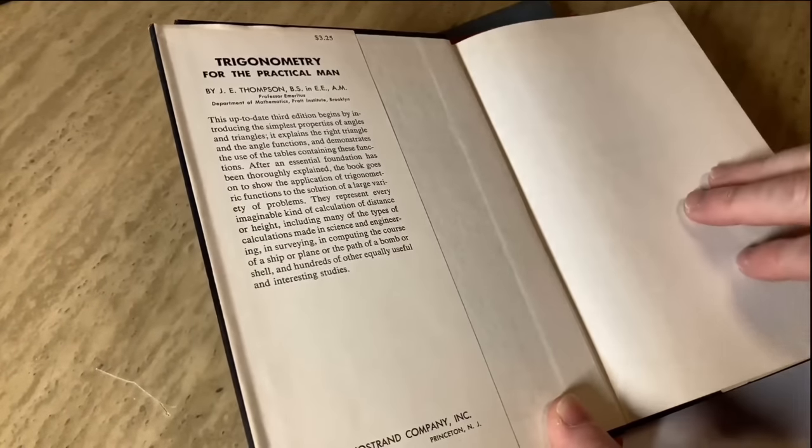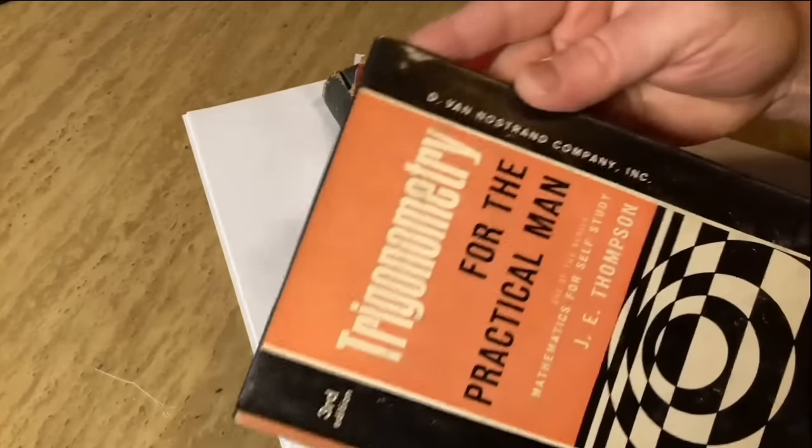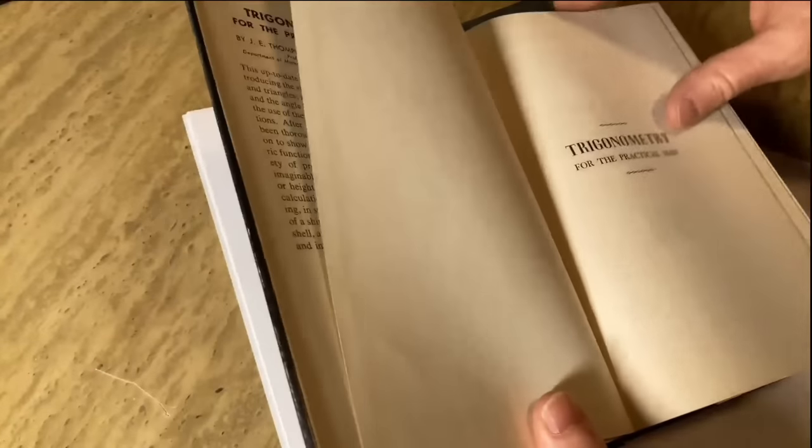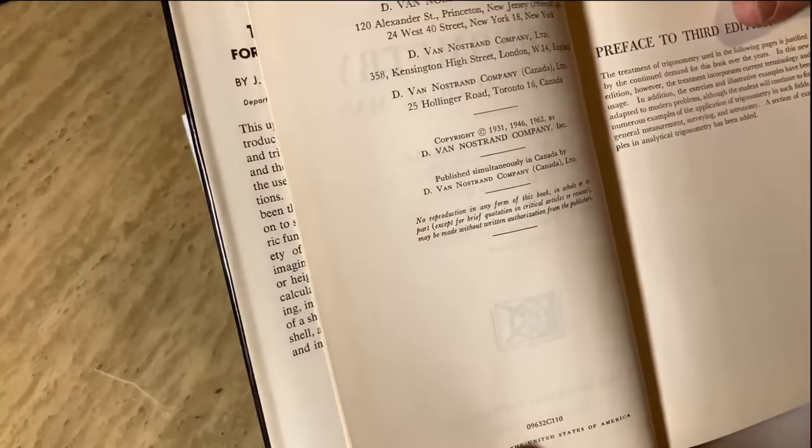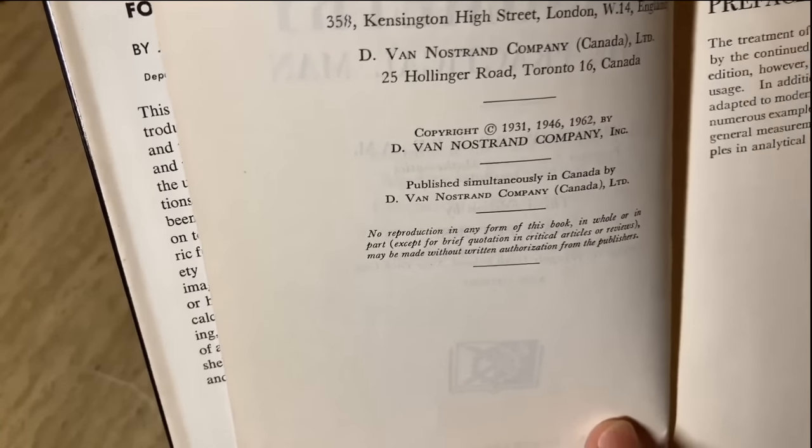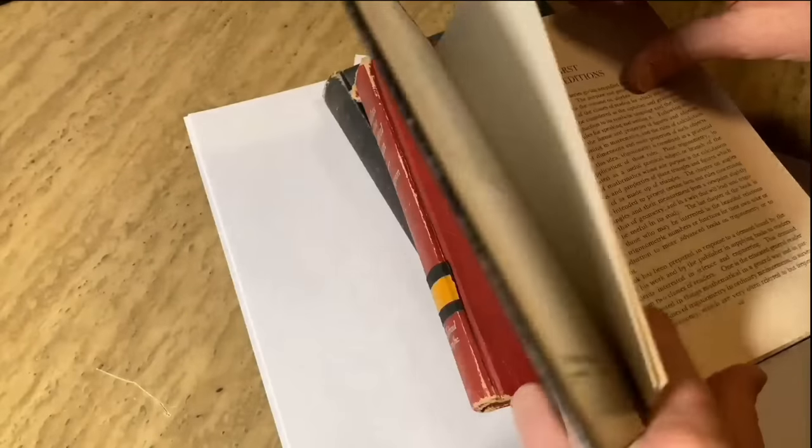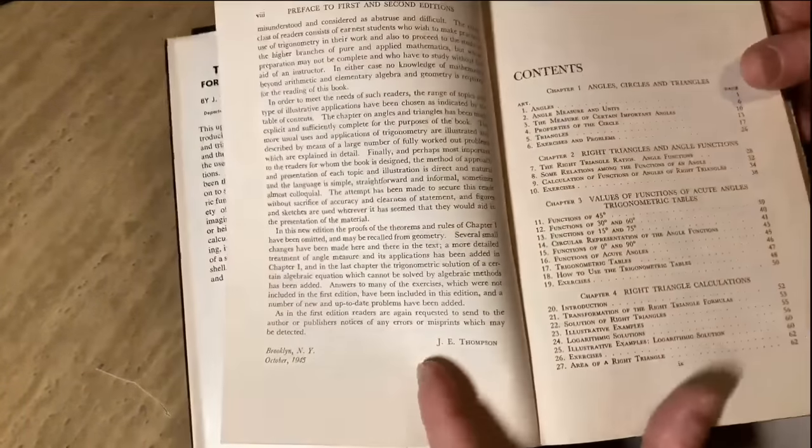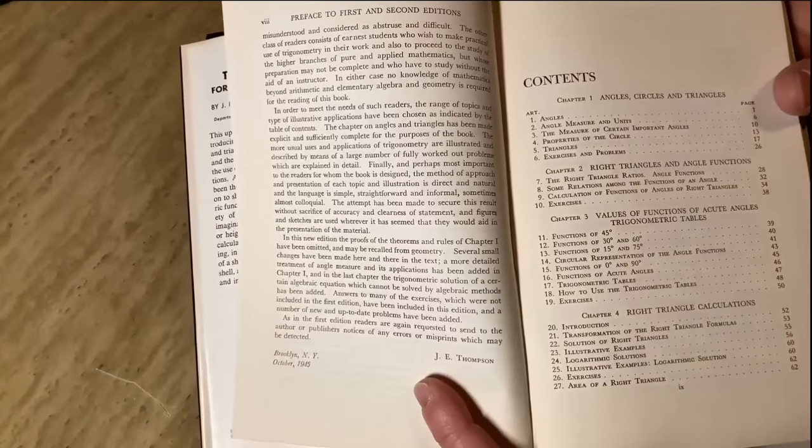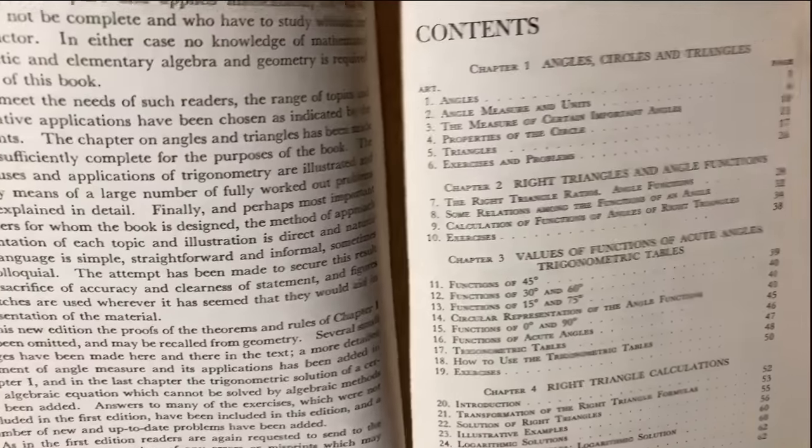So Trigonometry for the Practical Man. Let's open it up. And I believe this is a reprint. I think the original one is much older, because this is published by D. Van Nostrand Company, Inc. Let's see if we can find a copyright on this to see how old it is. Yeah, so this is a reprint, so 31 was the newer one, then 46, and then 62. This must be the copy from 1962, 3rd edition. 3rd edition.